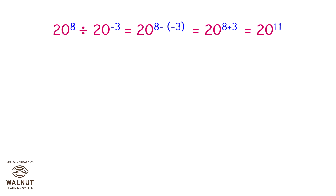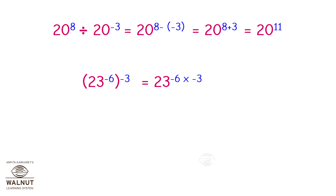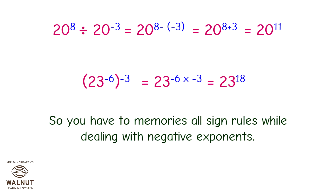Let's try this one: 23 raised to minus 6 whole raised to minus 3. We multiply the exponents: 23 raised to minus 6 into minus 3, which is equal to 23 raised to 18, because negative into negative becomes positive.